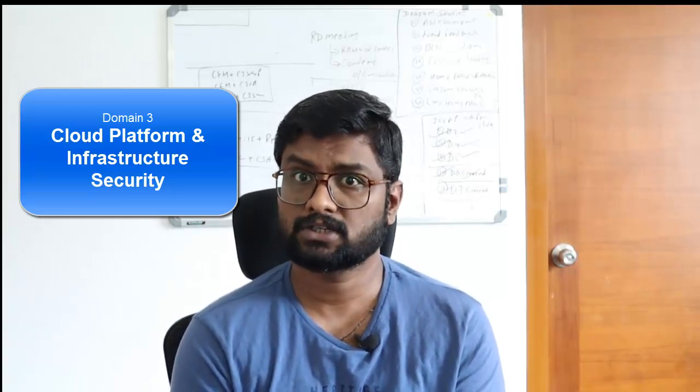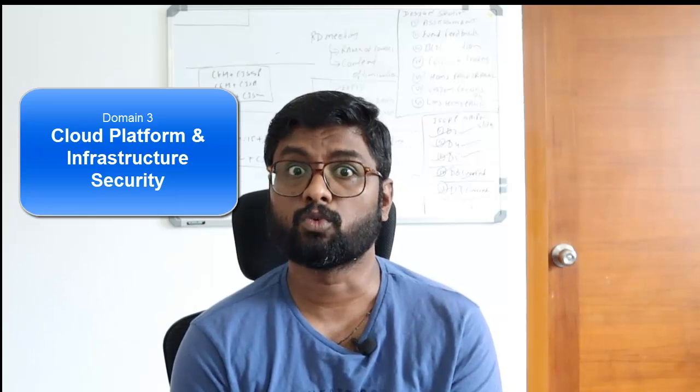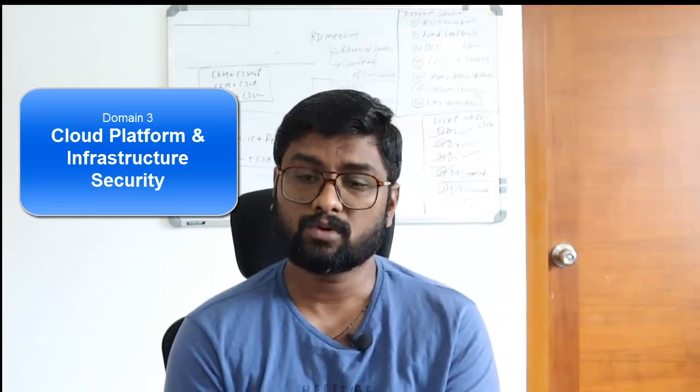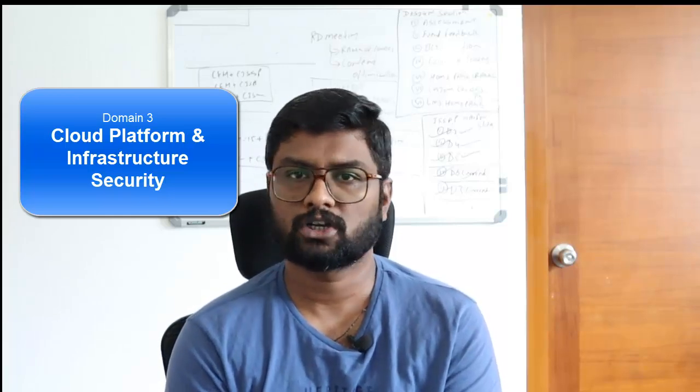In Domain 3, the first most important topic is SDN — Software Defined Networking — where the control layer is the critical layer. You can search 'Prabh SDN' on YouTube for my whiteboard video explaining it in 10 minutes. Also, you need to know compute characteristics: share, limit, and reservation — their pros and cons and how they impact BCP/DR. These compute metrics are very important.